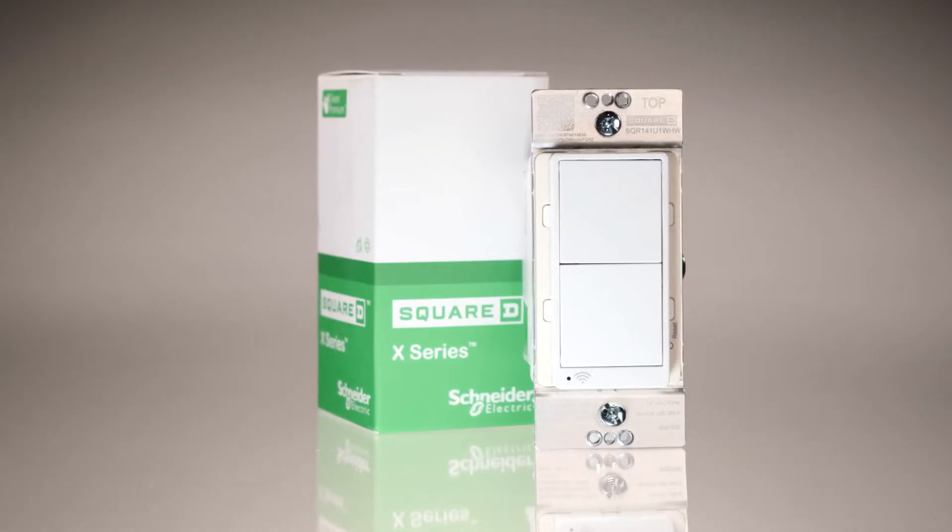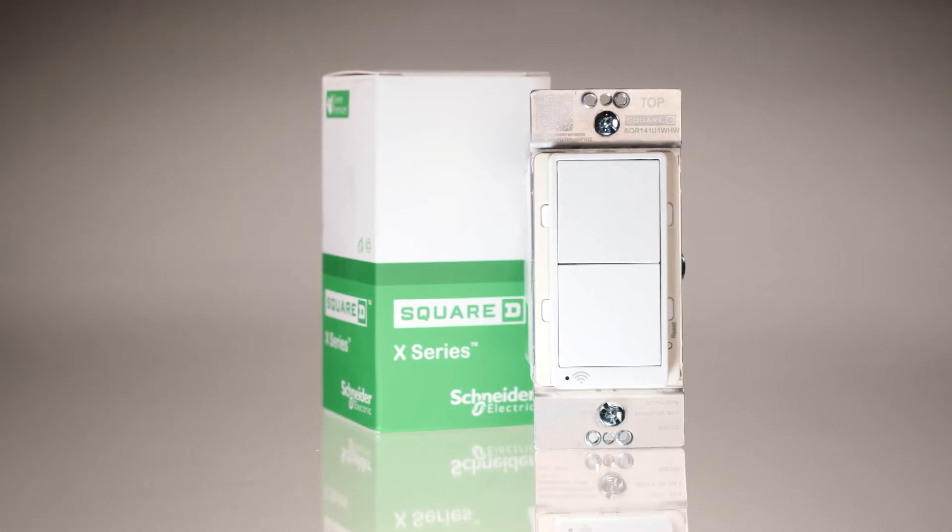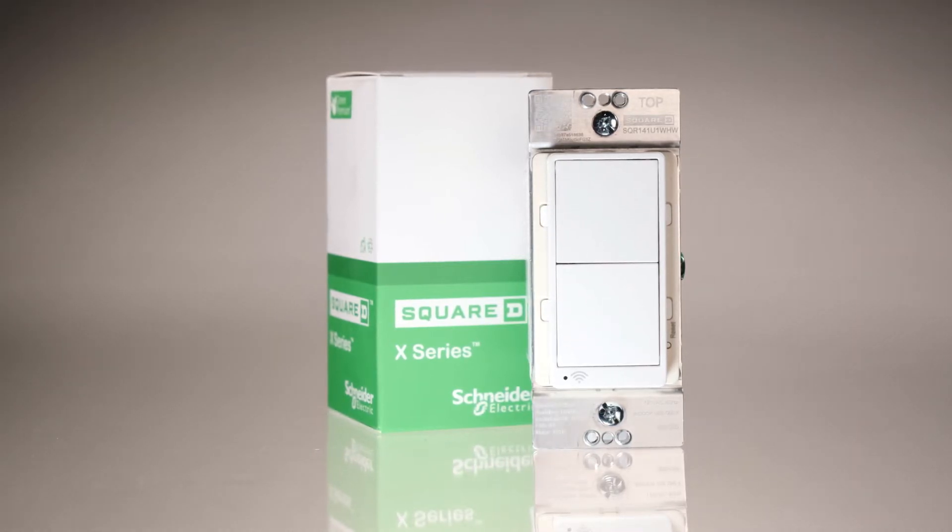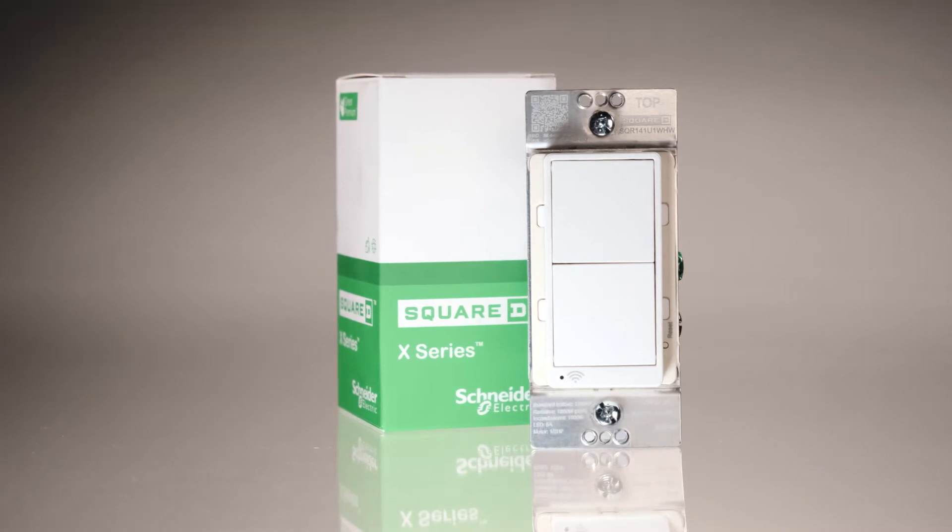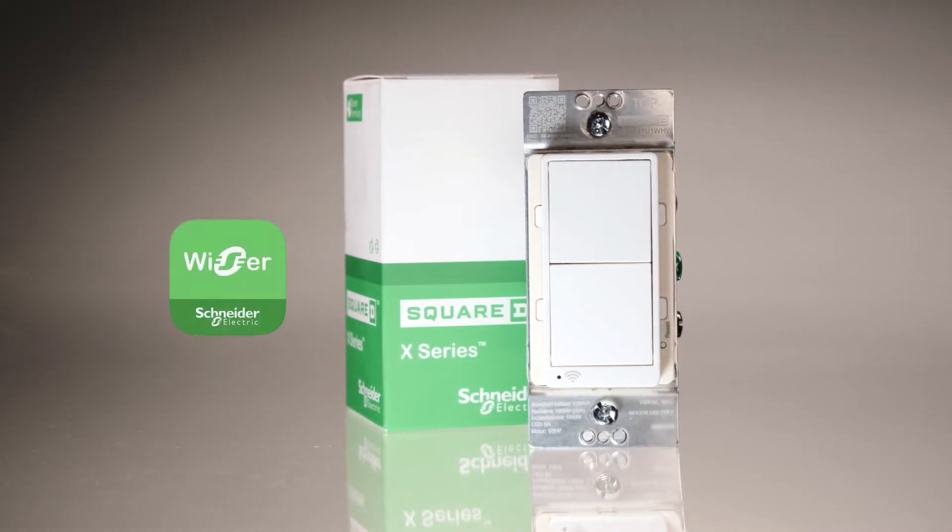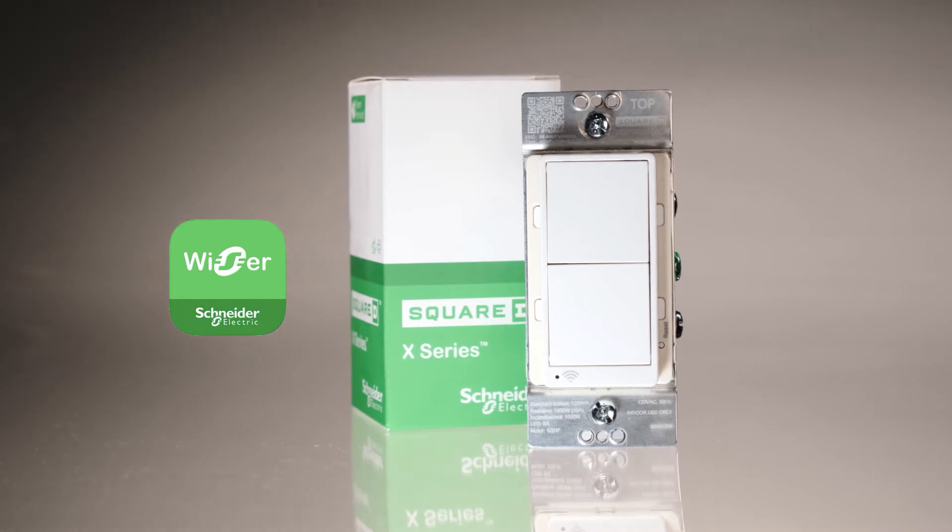These switches and dimmers replace standard controls and provide smart home features such as scheduling, remote on-off, and energy monitoring. There is a separate video on commissioning the device onto the network using the Wiser Home by Schneider Electric app.